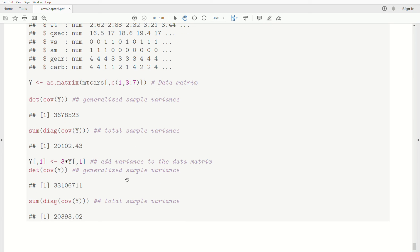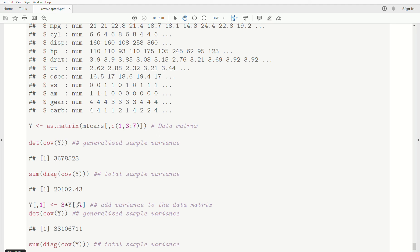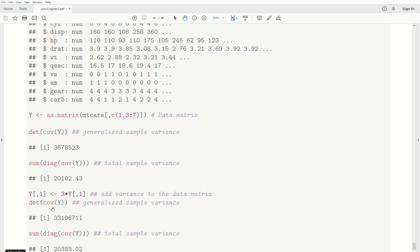And now, for illustration purposes, I want to add variance to the data matrix to show you that when we recalculate these, we get bigger numbers. So, the first column of the data matrix, which is miles per gallon, I'm going to take it times three and then put it back in that same data matrix. So, now when we calculate the generalized sample variance, the determinant of the sample covariance matrix, we get a number. And it's actually much bigger than the previous number. And that's because the ellipsoid to cover our data that's centered at the sample mean is bigger. That ellipsoid has a bigger volume to cover it.